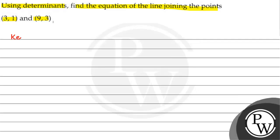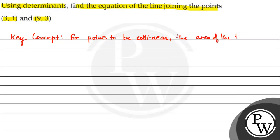What is the key concept? For points to be collinear, the area of the triangle is 0. Because collinear means joining the points — the line joining the points. In matrix or determinants, what do you do for the area of a triangle?